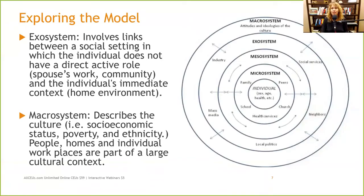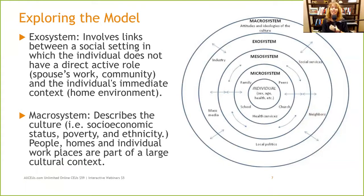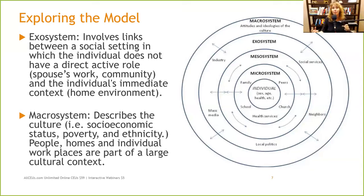The exosystem involves links in a social setting in which the individual does not have a direct active role. For example, how would I impact my spouse's work? If I am the identified patient and I've got clinical depression and I'm calling my spouse to come home, or my spouse is late to work or unproductive because he's always exhausted — it could negatively impact his work. So we want to look at how the home environment impacts work and how work impacts the home environment.